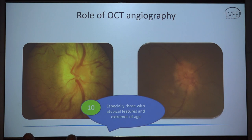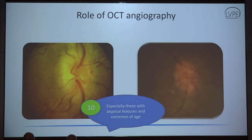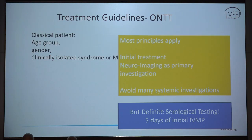A brief word about OCT angiography: both patients at extremes of presentation — for example, a 40-year-old presenting — can have NAION or MOG-associated optic neuritis, and they can both have hemorrhages. OCT angiography can give some clues; we can see capillary perfusion dropouts in NAION, helping in differential diagnosis.